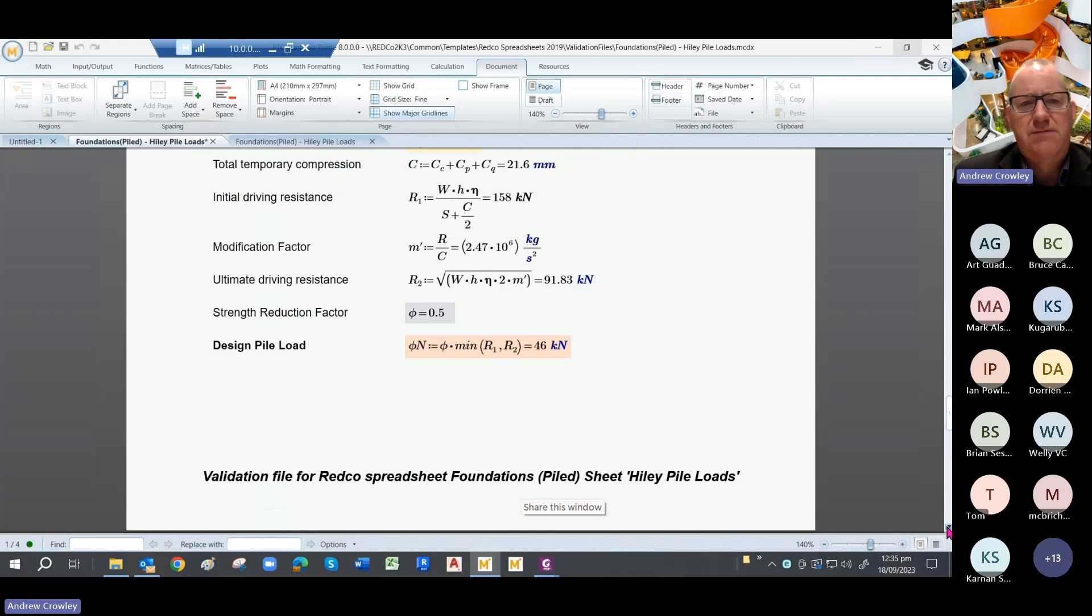You get your initial driving resistance based upon the first of the Hiley formula, and then you get a modification factor which is pulled out from the ratio of R to C. And so your ultimate driving resistance is given by this modification in there. So we're dropping it down quite a bit from 158 to 91.